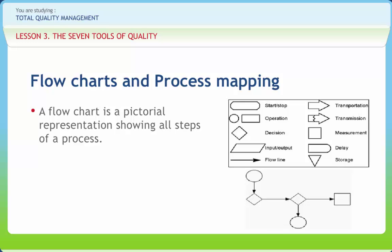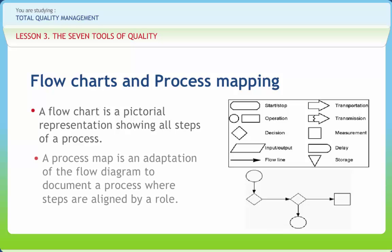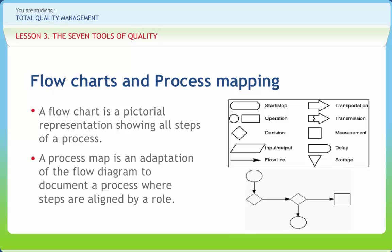Determine which steps add value and which do not in the process of simplifying work. Simple symbols include the diamond for decisions, parallelogram for input or output, rectangle for processing, and arrow for flowline. Flowcharts are used to define, standardize, or find areas for improvement. A process map is an adaptation of the flow diagram where steps are aligned by role or department. Usually the vertical axis defines the role and horizontal axis displays increasing time.